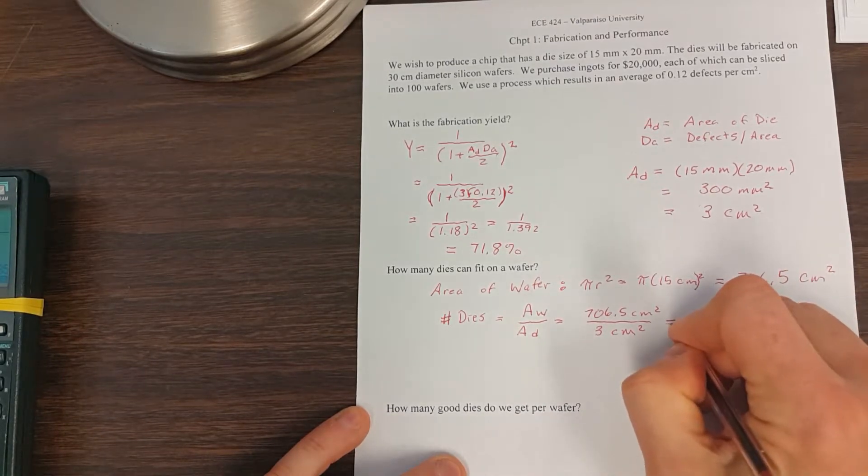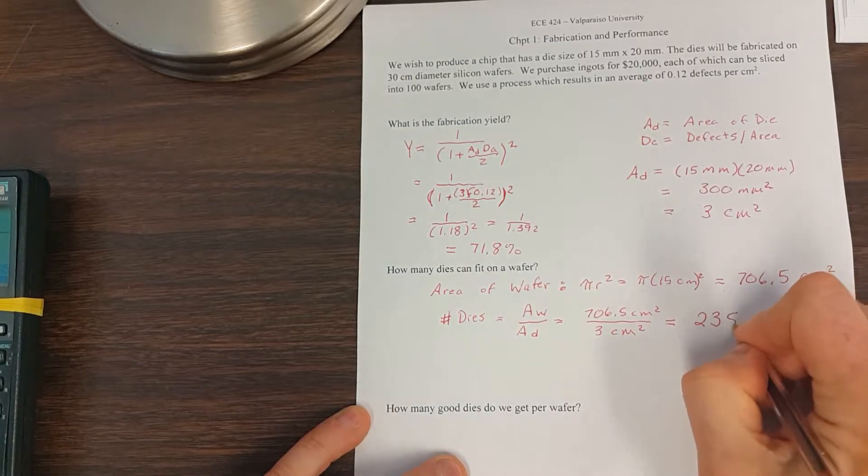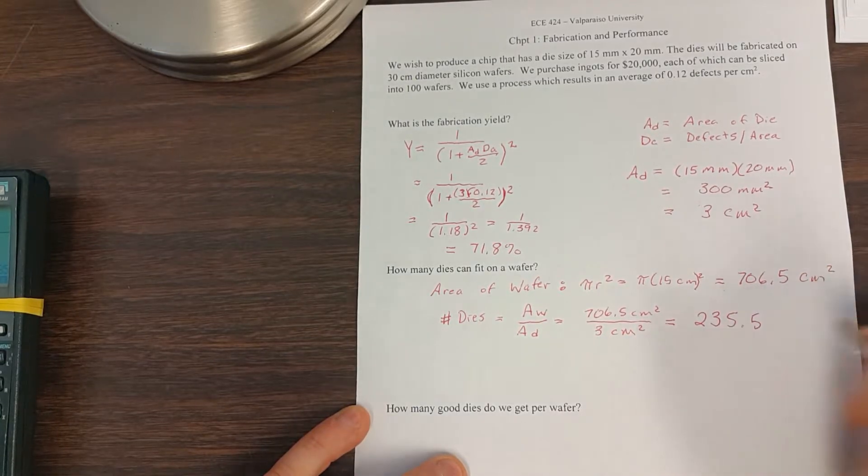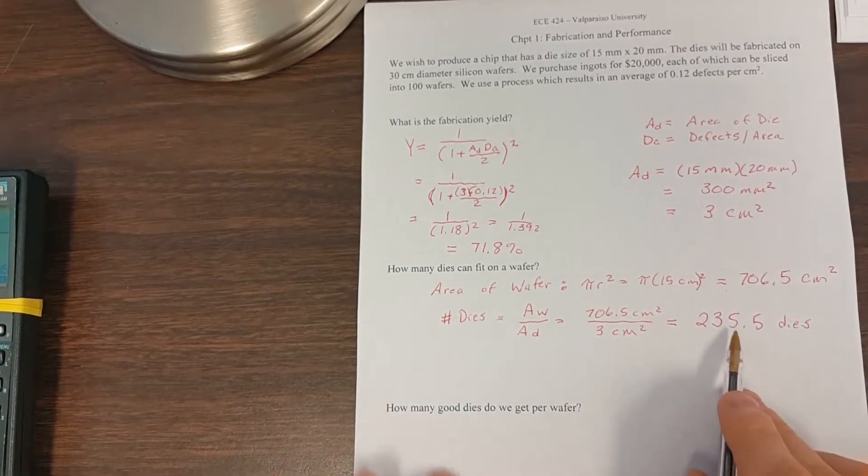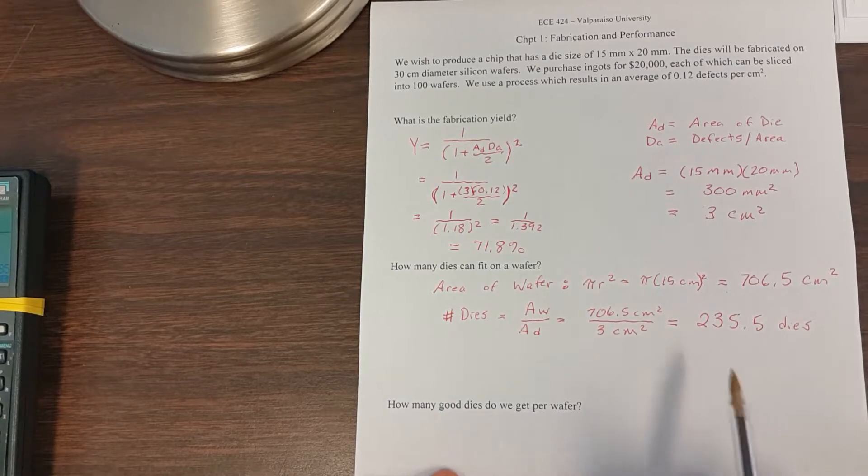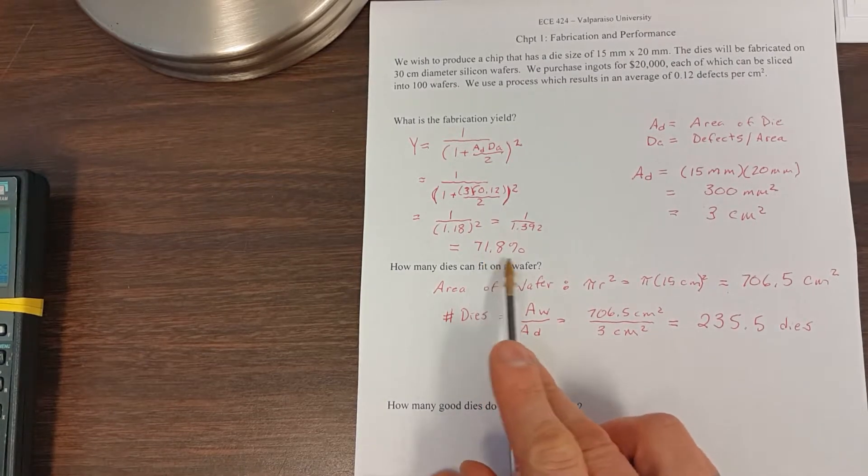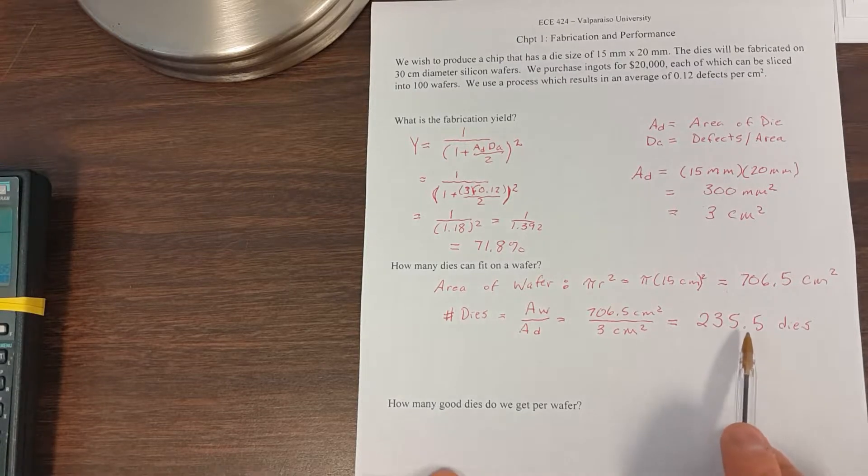and we see that fitting on a wafer, trying to be fabricated, are 235.5 dies. So 235 dies fit on a wafer. But remember, those aren't all going to be good. We only get 71.8% of those that actually work once we fabricate.